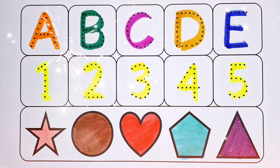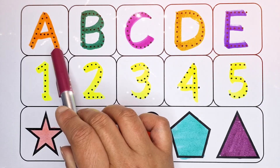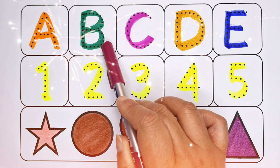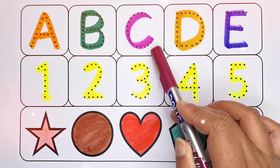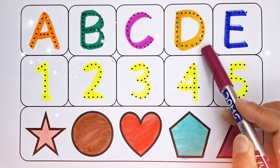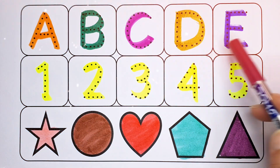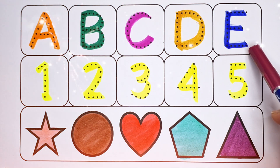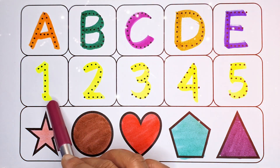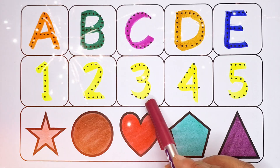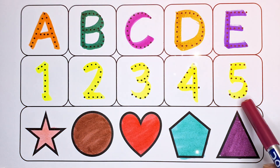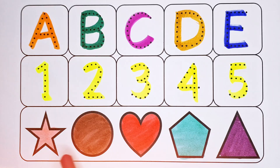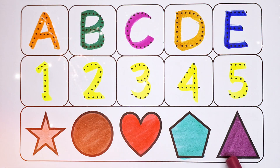A for airplane, B for buzz, C for cow, D for dragon, E for eagle. Number one, number two, number three, number four, number five. Star, circle, heart, pentagon, triangle.